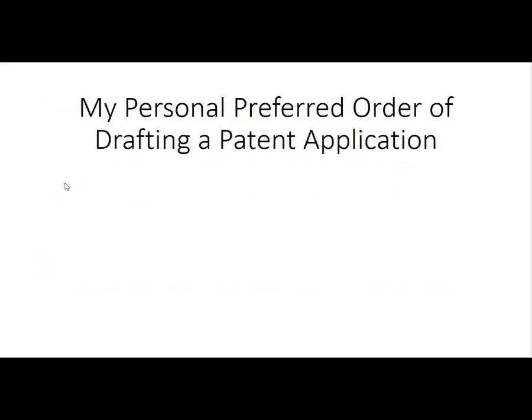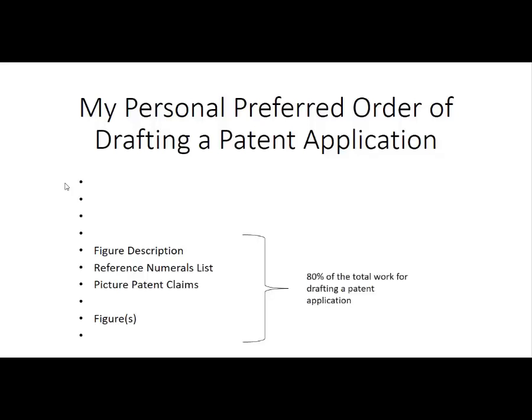Now let's look at what we have done. My personal preferred order of drafting a patent application starts with the figures. Then we do the figure description and the reference numerals list. The important thing is that we already have our picture patent claims, and by doing so we have covered 80% of the total work for drafting a patent application. As we let a patent drafting robot do this, we can draft five times more patent applications in the same time as before, when all this was done manually. All that is needed are good figures together with the reference numerals list, and these components are provided by CAD systems — computer aided design.